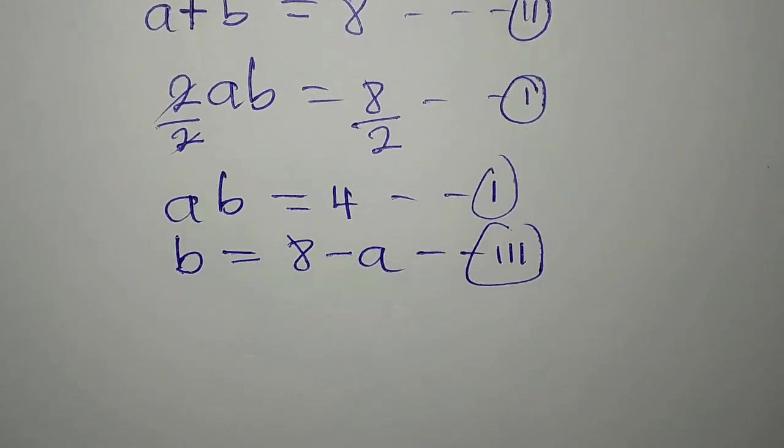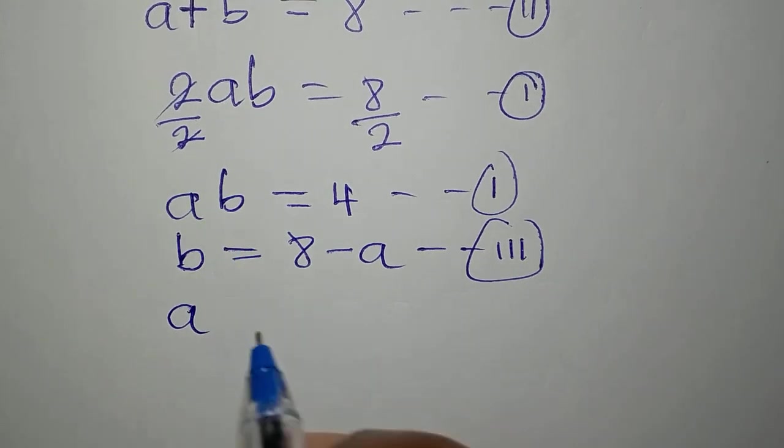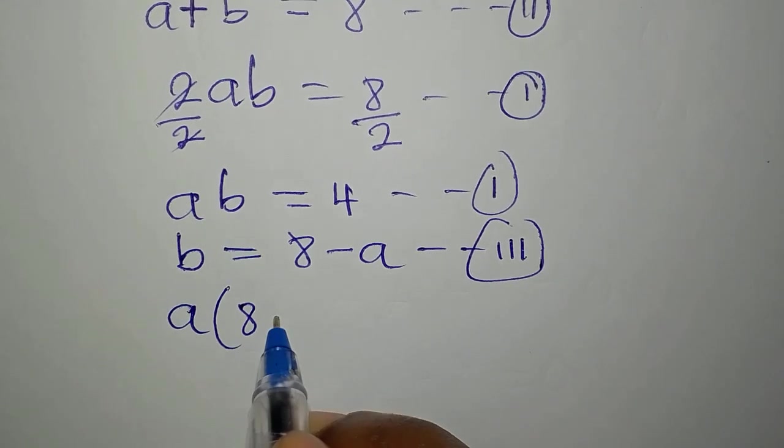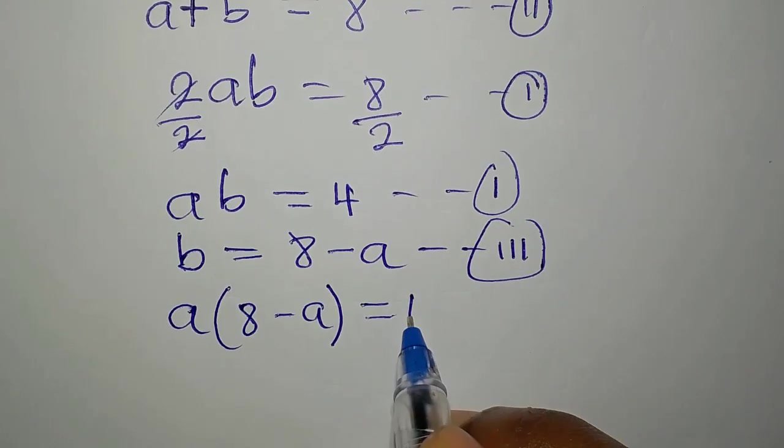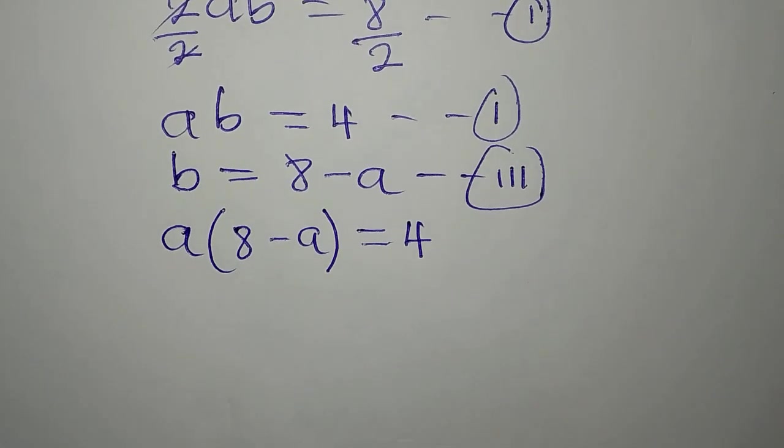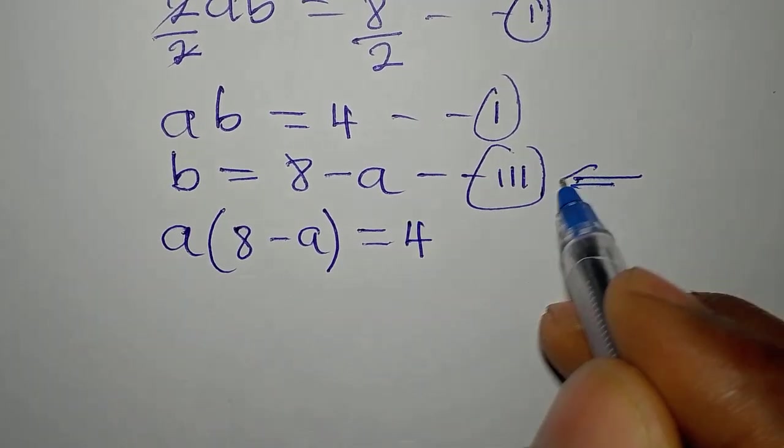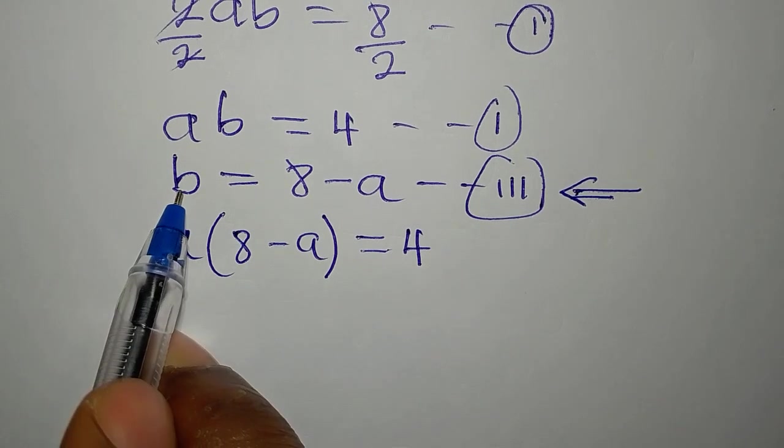So we are going to put this equation 3 into equation 1, which is AB equals 4. Now, I am going to write A first. Then, in place of B, I open bracket and I write 8 minus A. Then, everything is equal to 4. What do we do? Open the bracket. We have to take note of this equation 3, because we need it to get the value of B.